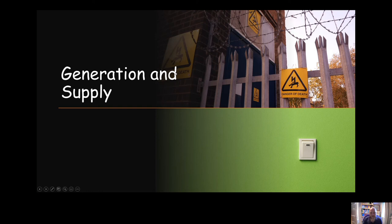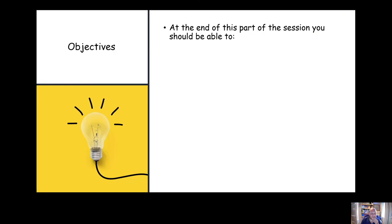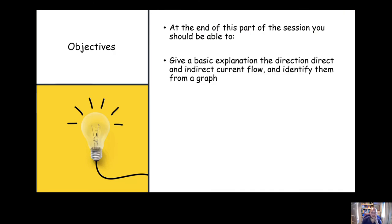Welcome to part one of your electrical module. Today we're going to look at generation and supply. At the end of this part of the session, I want you to be able to give a basic explanation about the direction of direct and alternating current flow, and be able to identify these on a sine graph.